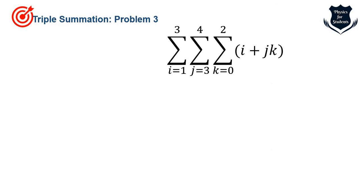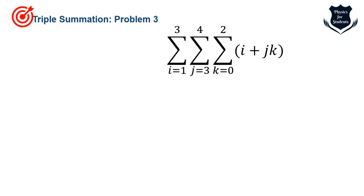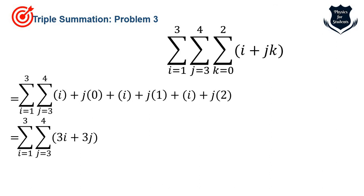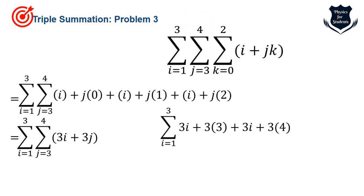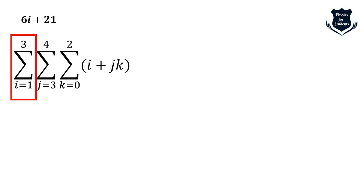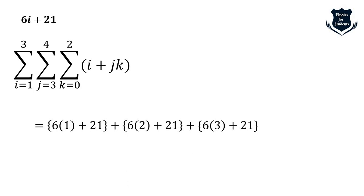Another problem uses the expression (i + j)k. The innermost sum k=0 to 2 gives 3i + 3j. Then j=3 to 4 gives 6i + 21. Finally the outermost sigma i=1 to 3 with 6 and 21 constant, varying i as 1, 2, 3, gives the result 99. Done.